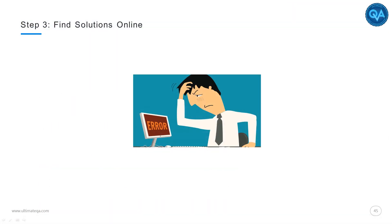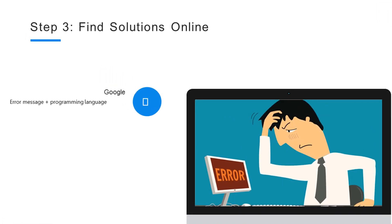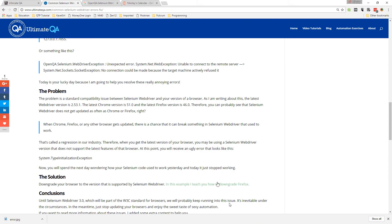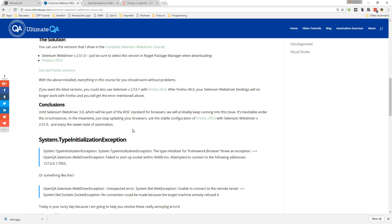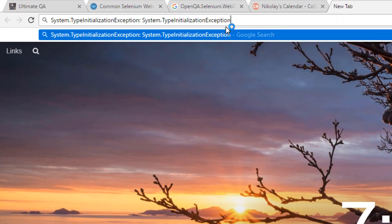If none of those solutions work, you can move on to step number three: finding solutions online. This is what makes you an amazing QA engineer — just kidding, it's just part of the job. I go online to find solutions every single day. My favorite place to go is Google. All you have to do is go to Google, put in your error message and the programming language you're using, and it will return a bunch of solutions. Let me show you an example.